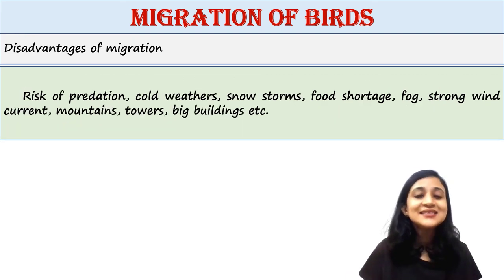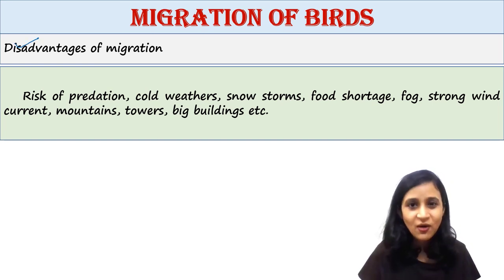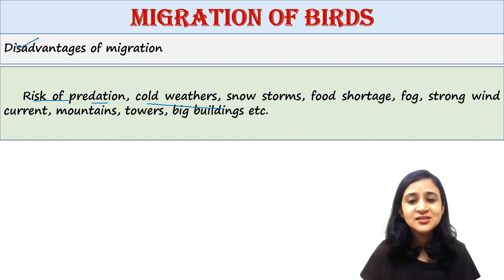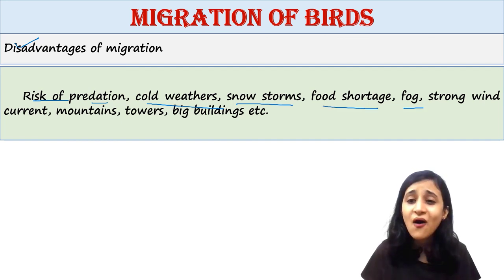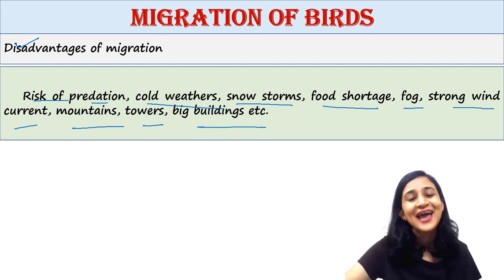Next are the disadvantages of migration. There are many factors that create problems for migratory birds, such as the risk of predation, cold weather, snowstorms, food shortage, fog, strong wind currents, mountains, towers, and big buildings.